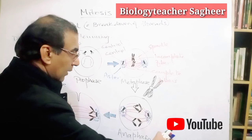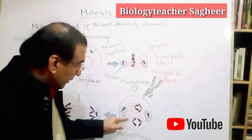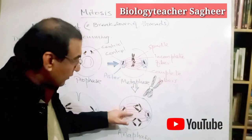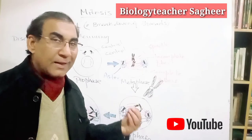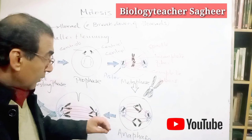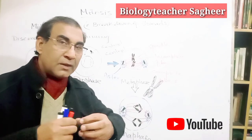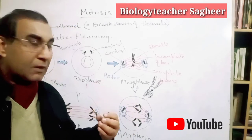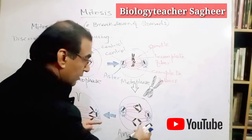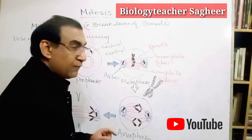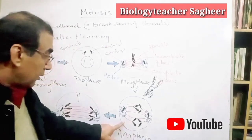The complete spindle fibers increase in their length. The incomplete fibers undergo reduction and the chromosomes move towards their respective poles. The complete fibers increase in length. 'Ana' means back, and 'meta' means middle.